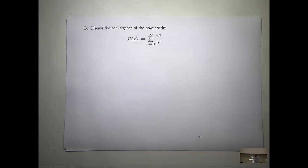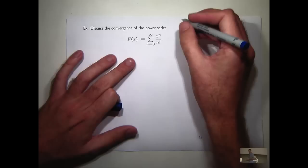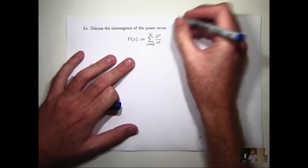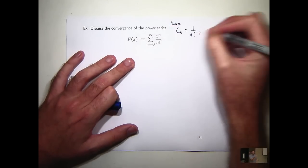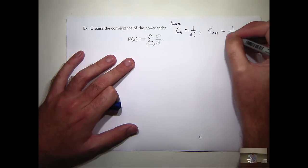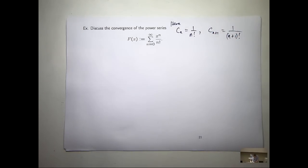Here's a power series. Here the c_n is 1 on n factorial. So c sub n plus 1 is just 1 on n plus 1 factorial.